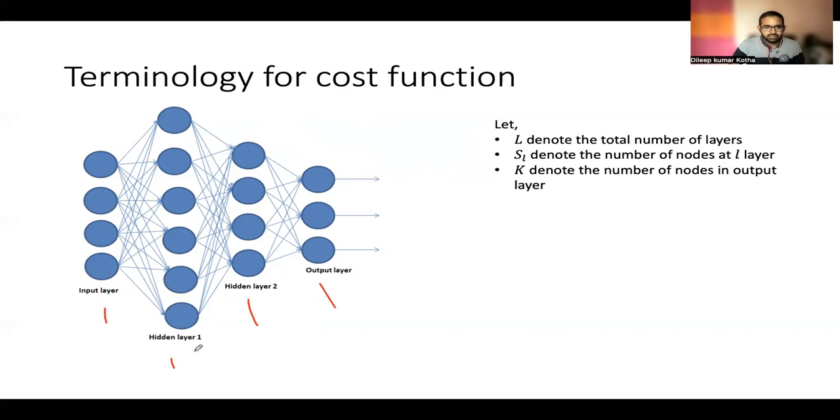And SL denotes the number of nodes at L layer. For example, here S2 denotes the total number of nodes in this layer. The value of S2 will be six because we have six nodes here. Similarly, the value of S3 will be four because we have four nodes here.